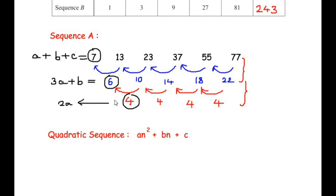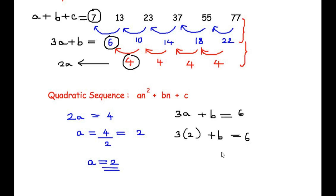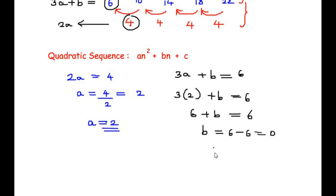Starting with 2a equals 4, so a equals 4 divided by 2, which is 2. Next, 3a + b equals 6 (the first term of the first differences). Substituting a = 2: 3 times 2 plus b equals 6, so 6 plus b equals 6, giving b equals 0.